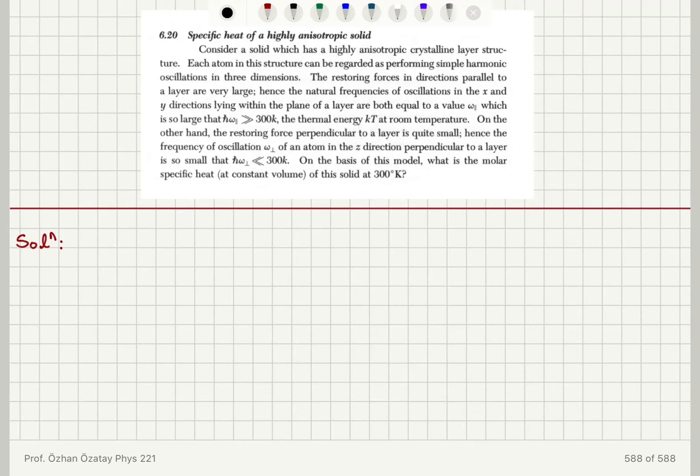The restoring forces in directions parallel to a layer are very large. Hence, the natural frequencies of oscillations in the x and y directions lying within the plane of a layer are both equal to a value omega parallel, which is so large that h-bar omega parallel is much greater than 300K, the thermal energy at room temperature.